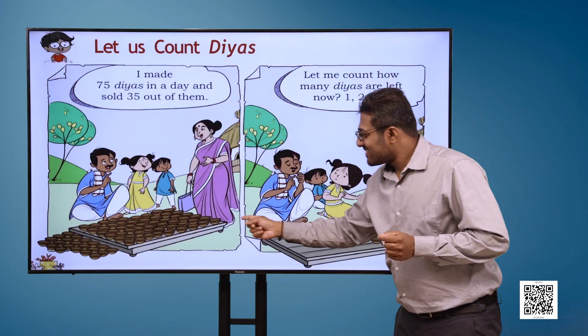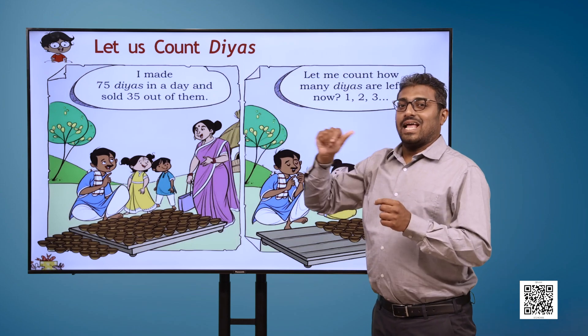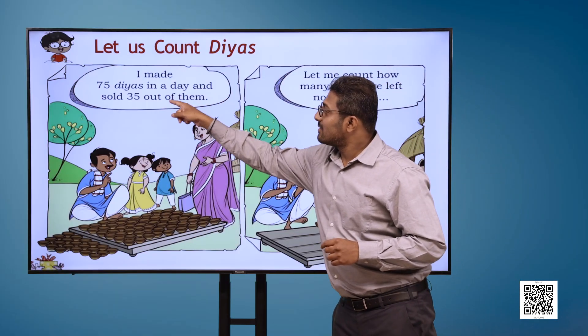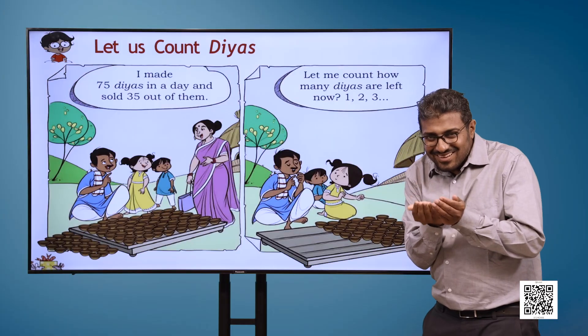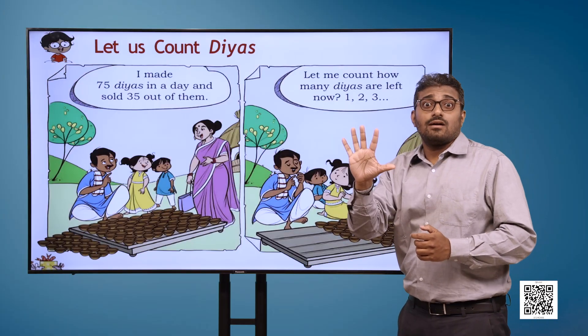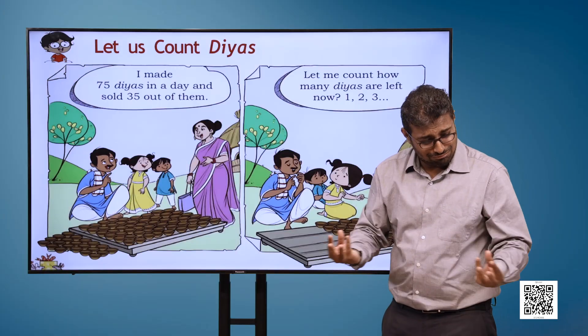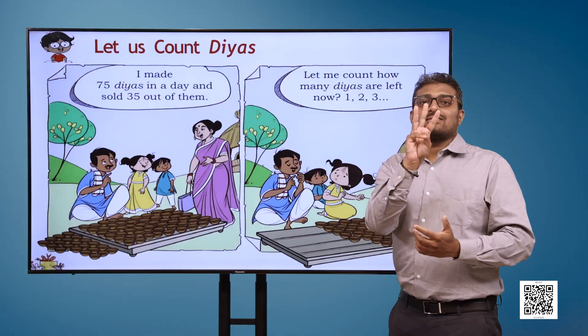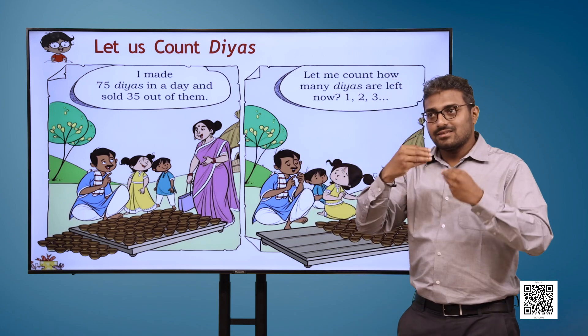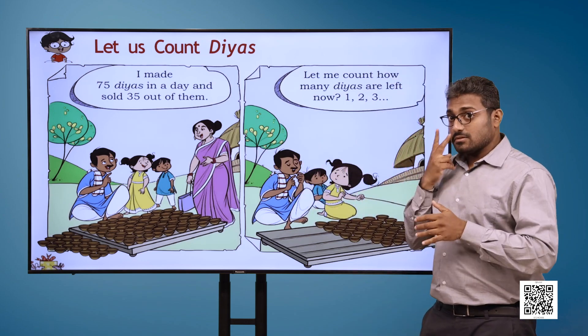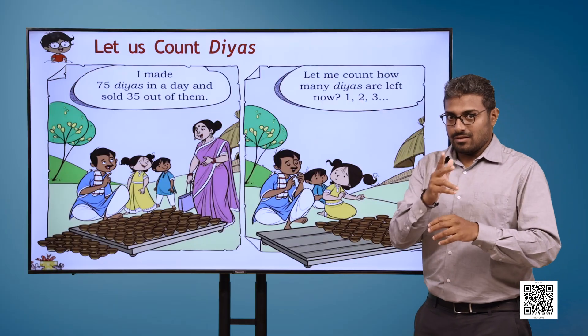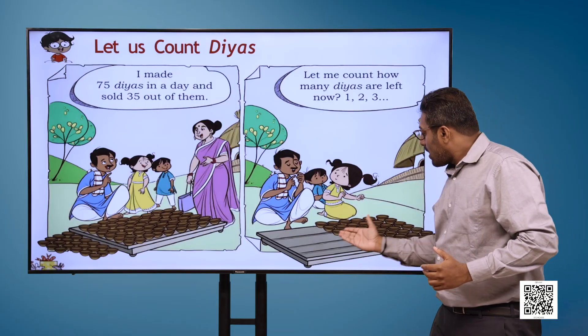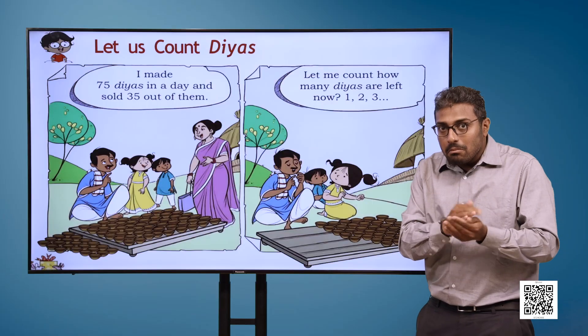Let us count the diyas. Here we have two images in front of us. In the first image, there is a man selling diyas with his kids. A woman approaches him. The man says, I made 75 diyas in a day and sold 35 out of them. In the second image, the man is calculating. Let me count how many diyas are left now.